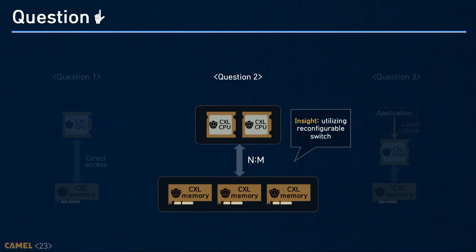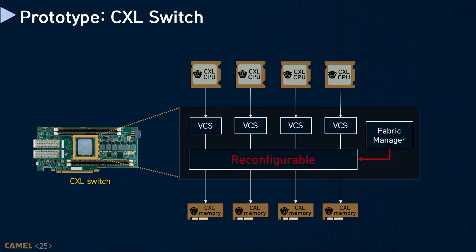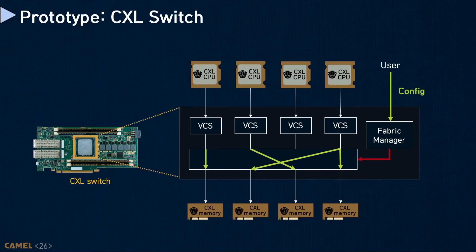To realize memory disaggregation, DirectCXL implements a reconfigurable switch that supports multiple CXL CPUs and CXL memory devices. Our CXL switch uses the same hardware platform as the CXL CPU and supports four CXL CPUs and four CXL memory devices. The CXL switch includes a reconfigurable crossbar, so connections among CXL CPUs and CXL memory devices can be changed. Users can configure the crossbar through Fabric Manager. After configuration, the crossbar connects CXL memory devices and CXL CPUs, and the connection can be changed at runtime using hot-plug and hot-remove features.